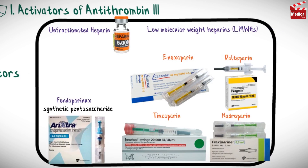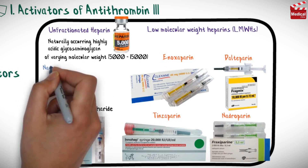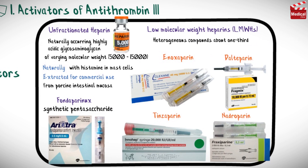Heparin is a naturally occurring, highly acidic glycosaminoglycan of varying molecular weight from 5,000 to 15,000. It occurs naturally as a macromolecule complexed with histamine in mast cells, and is extracted for commercial use from porcine intestinal mucosa. Low molecular weight heparins are heterogeneous compounds about one third the size of unfractionated heparin. And Fondaparinux is a synthetic pentasaccharide.